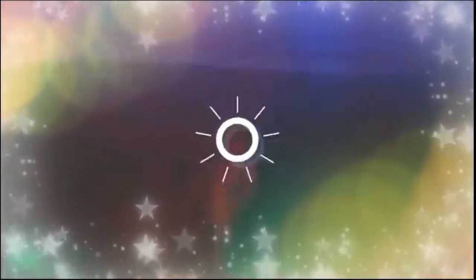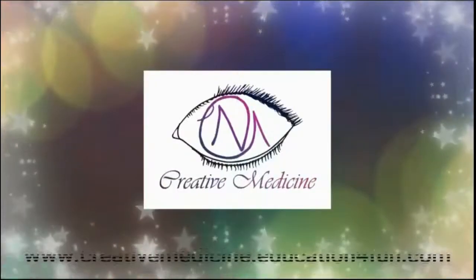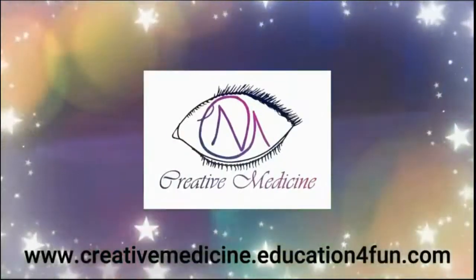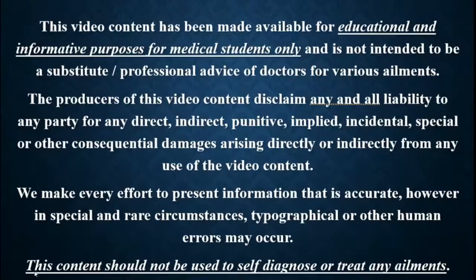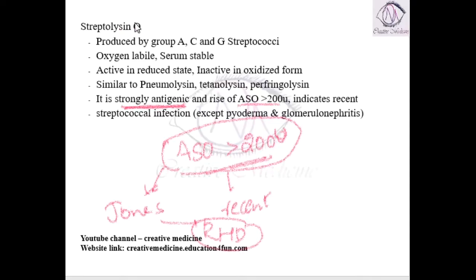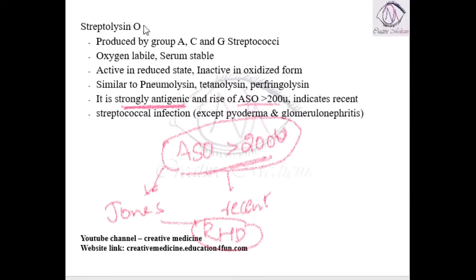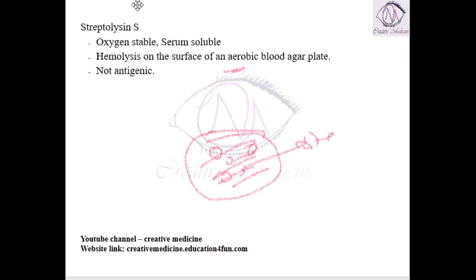Hello friends, welcome to Creative Medicine. In this lecture, we will learn about the differences between Streptolysin O and Streptolysin S. Streptolysin O is oxygen labile and serum stable, whereas Streptolysin S is oxygen stable and serum soluble.